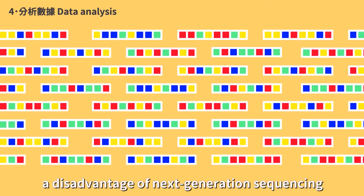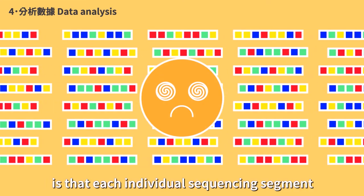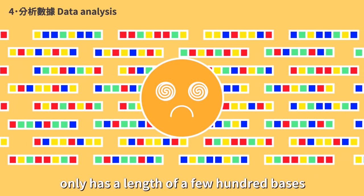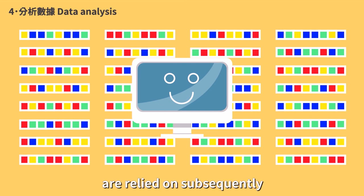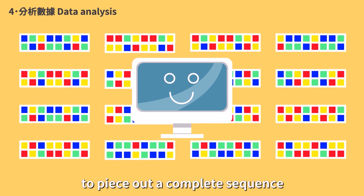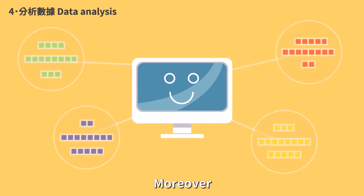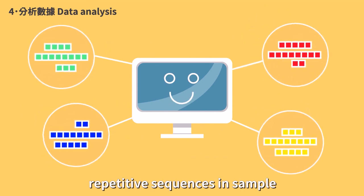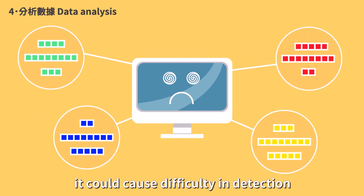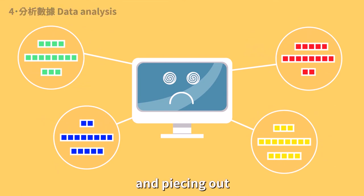However, a disadvantage of next-generation sequencing is that each individual sequencing segment only has a length of a few hundred bases, and lots of bioinformatics tools are relied on subsequently to piece out a complete sequence. Moreover, if met with a large amount of repetitive sequences in sample, it could cause difficulty in detection, interpretation, and piecing out.